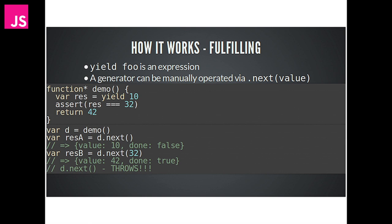There are potentially more values to yield - it's not the end of the function and it's not a return keyword. We can then use d.next again to carry on, but if we like, we can feed it a value to return from that yield. By feeding it 32, we're able to inject that value into the function, and that becomes the value of res inside the function - hence the assert passes. The result we then get is 42, which is the result from the return, and the done property is true because it's the last operation. If we call d.next again, it's going to throw because that function is done.